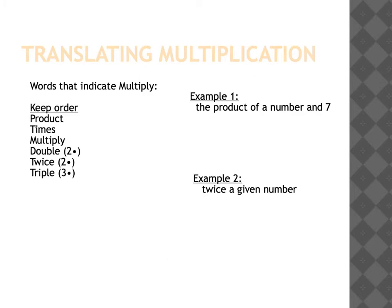Moving on to translating multiplication. With multiplication, we don't have to worry so much about the order. The most common words are: product, times, and multiply. Then we have some special ones — double means multiply by two, twice also means multiply the result by two, and triple means multiply the result by three. Let's take a look at a couple of examples.